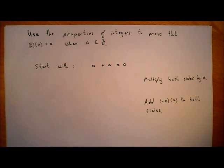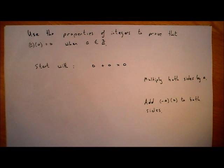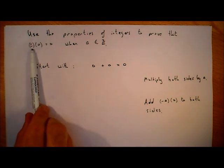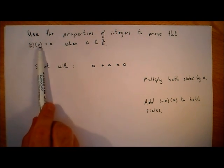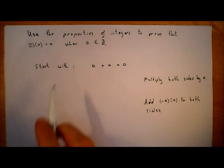In the last video I gave you six different properties of integers, and now we're going to use those properties to prove a few interesting things — things you know already but maybe you've never seen the proof of. So the first thing we're going to prove is that an integer multiplied by zero gives zero. For example, three times zero we all know is zero, but we're going to actually prove it.